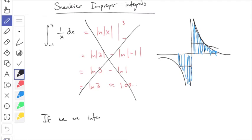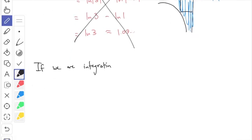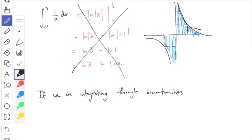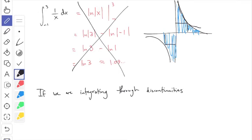These are sneakier improper integrals. The moral of the story is: if we are integrating through a vertical asymptote, we have problems. Really it's about integrating through discontinuities. This function, 1/x, is not continuous at zero, so when the integration range goes through zero you should be worried. It doesn't necessarily mean the integral doesn't exist — it just means you have to be careful. If we are integrating through discontinuities, it is improper.